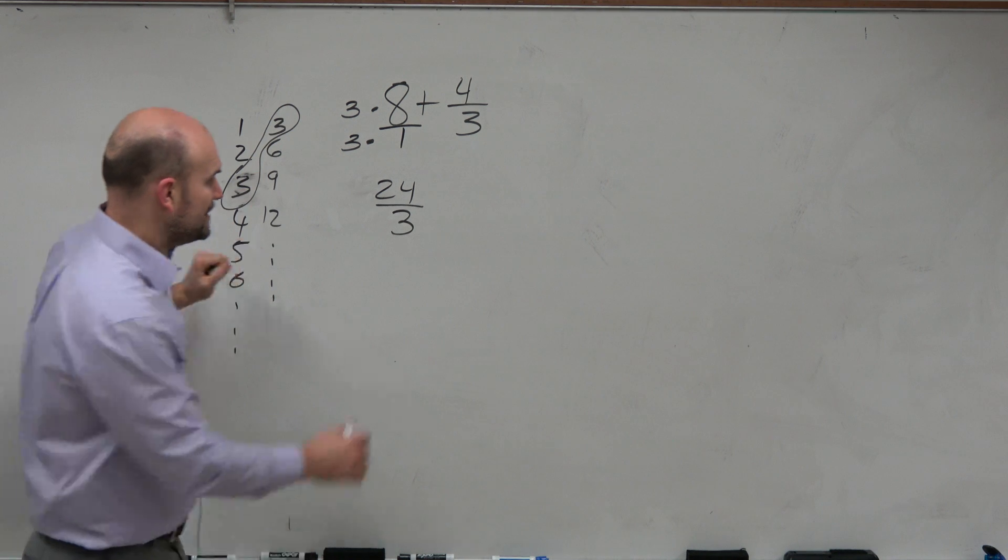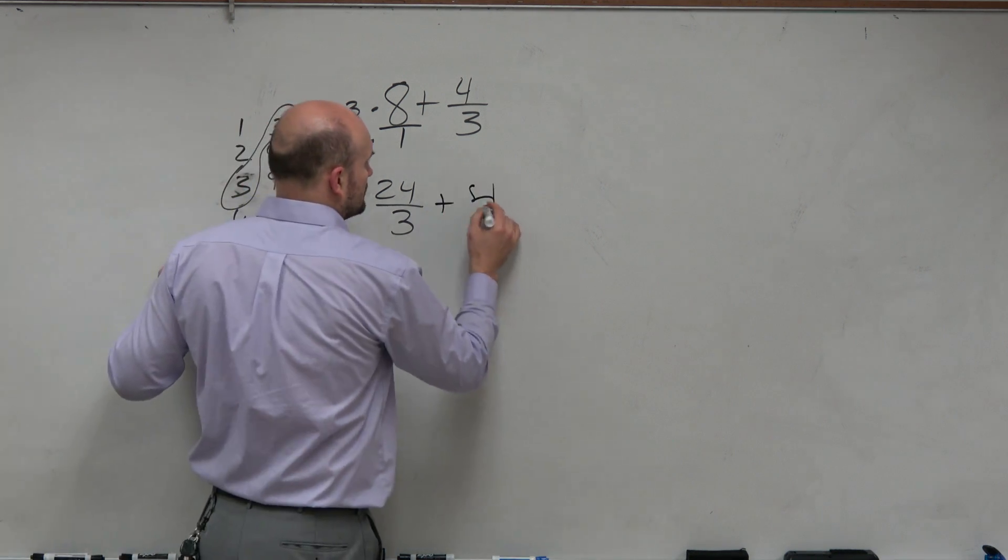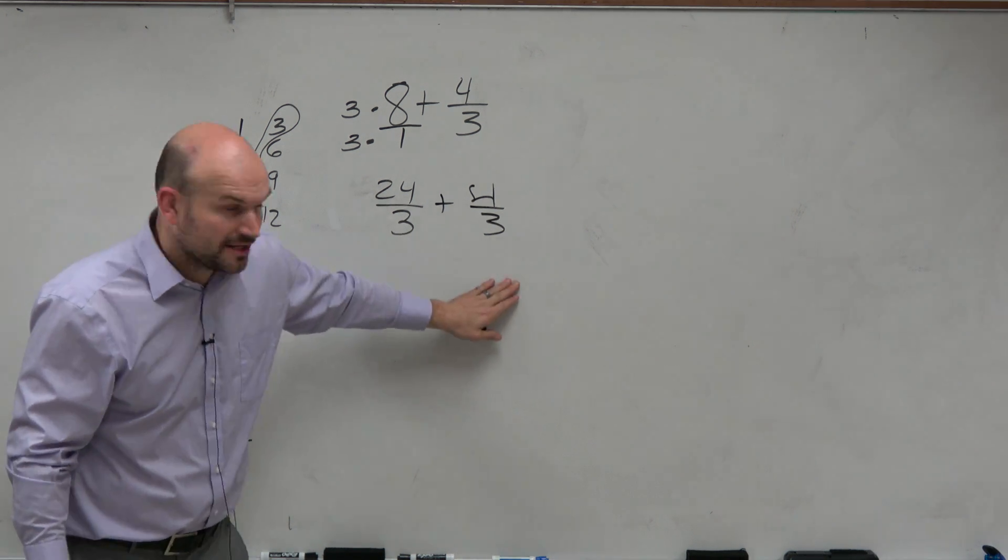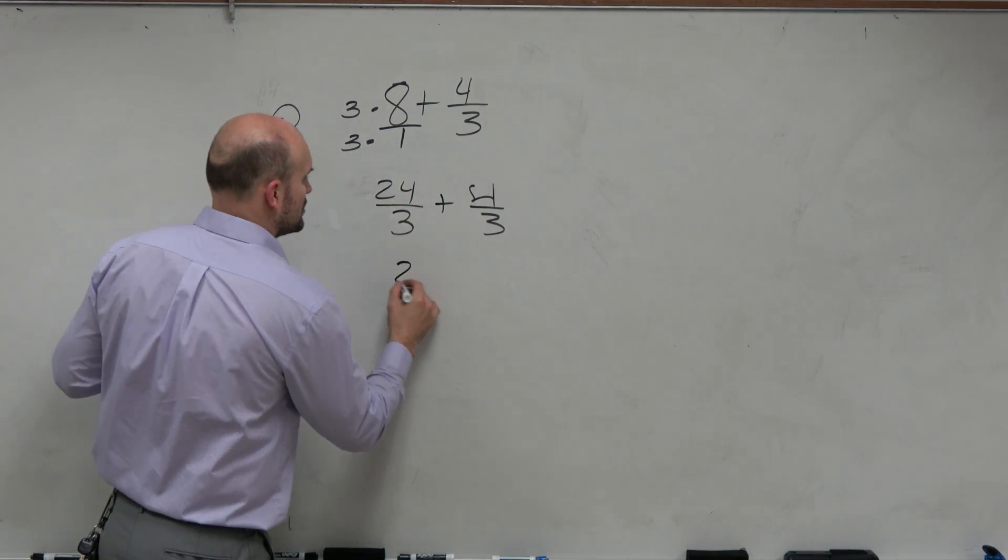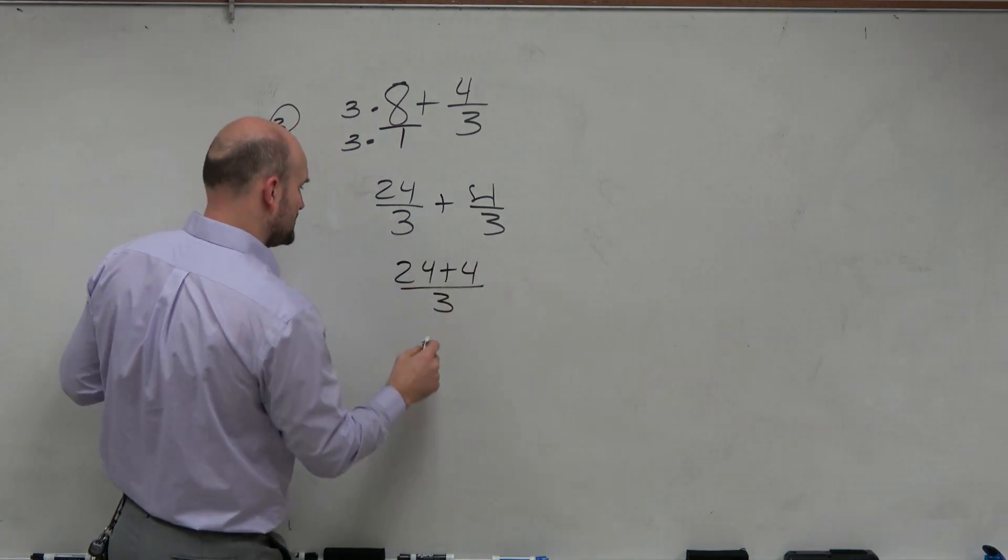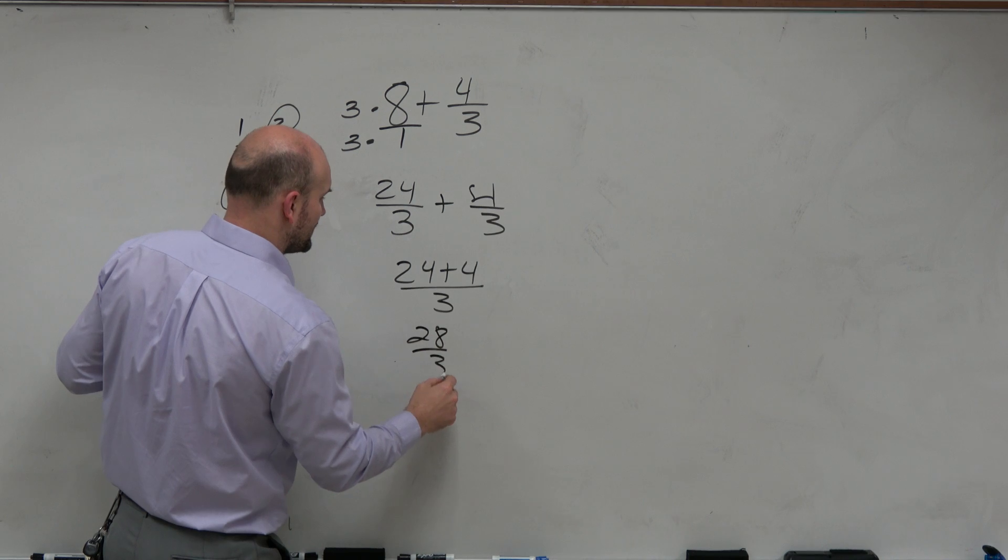So we're going to multiply by 3 over 3. And now, we don't need to do anything to that fraction. Now, we have the common denominators. And now, we can just apply our operation to our numerator. So basically, we're just going to add 24 plus 4 over 3. 24 plus 4 is 28 over 3.